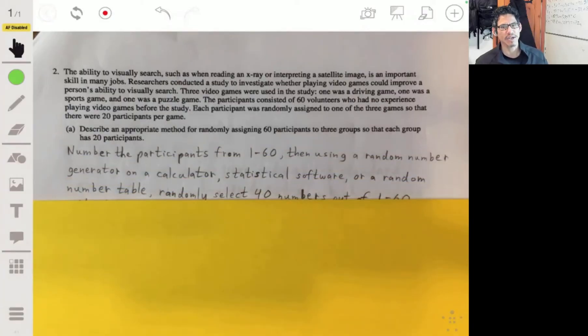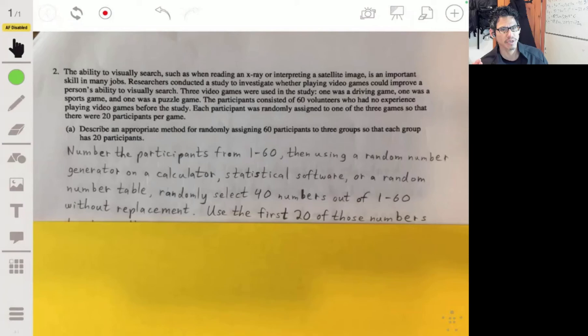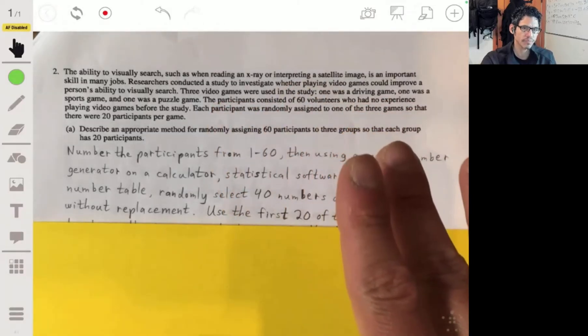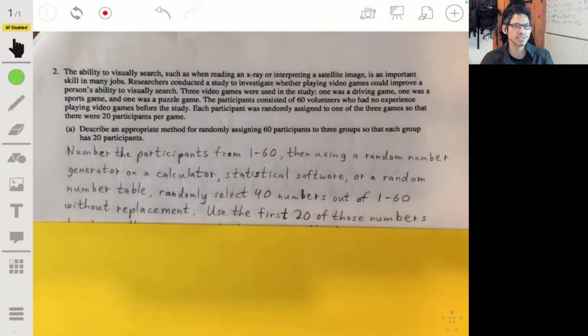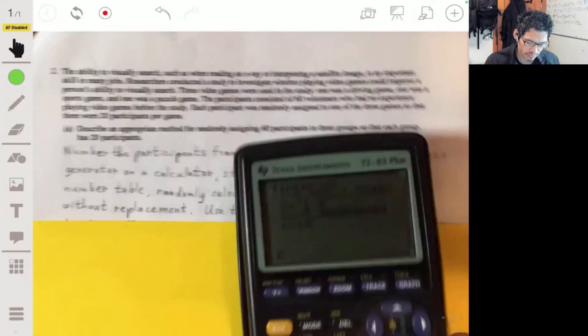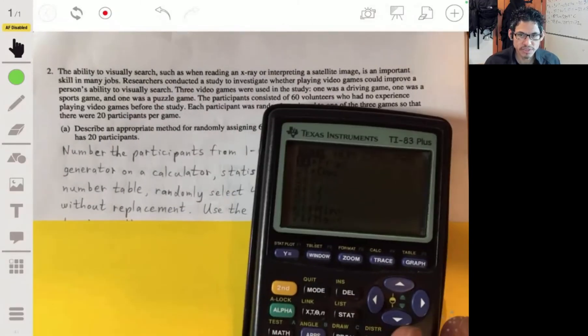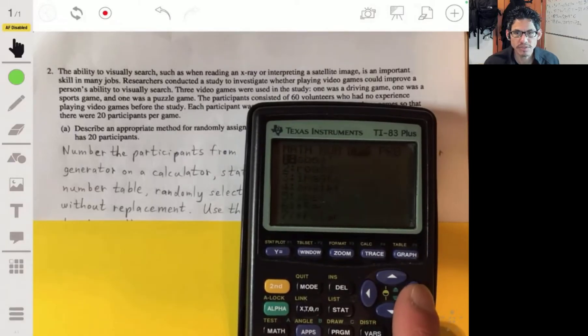The way I decided to go about it is having the first 40 numbers be selected from 60. So all the participants get a number from 1 to 60. And then I use a calculator—if you remember, your teacher showed you this—there's a probability random integer, 1 comma 60.